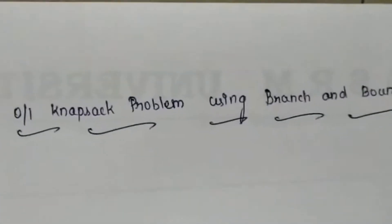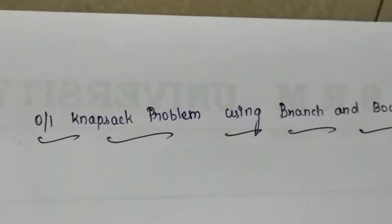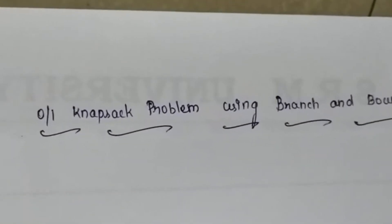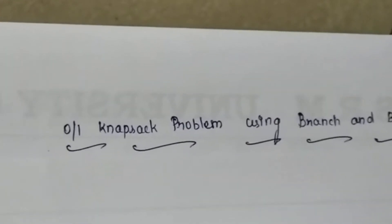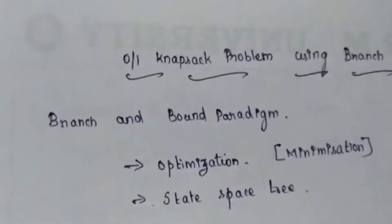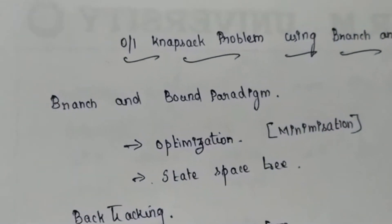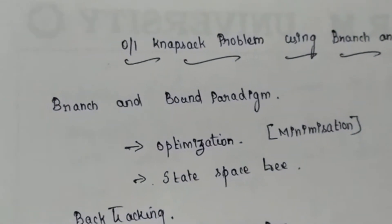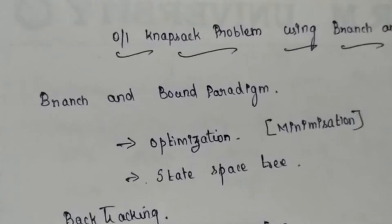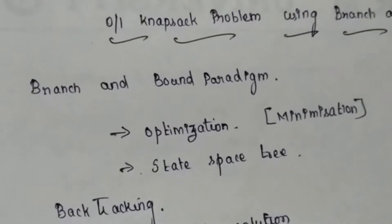This video helps you learn how to solve the 0/1 knapsack problem using the branch and bound technique. Let's first see what the branch and bound paradigm is. This paradigm is used to find optimal solutions for any problem — specifically for optimization problems.